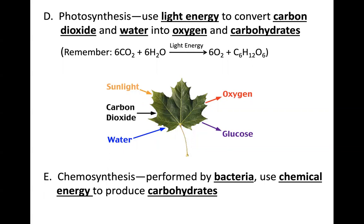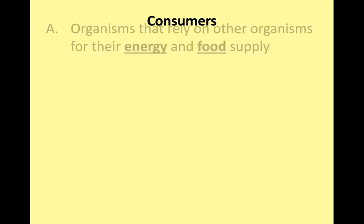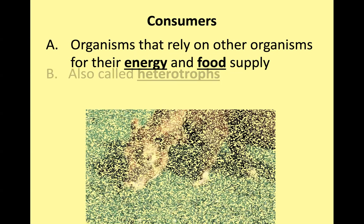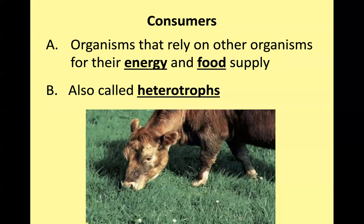The reactants for photosynthesis are carbon dioxide, water, and sunlight energy, which produce oxygen and glucose. Then we have chemosynthesis, also performed by bacteria, which use chemical energy to produce carbohydrates. So we have organisms that are producers, and then we have those that are consumers. Consumers are organisms that rely on other organisms for energy and food supply. We also refer to these as heterotrophs. You should be able to distinguish between an autotroph or producer, and a consumer or heterotroph.